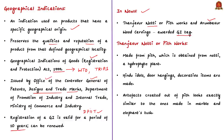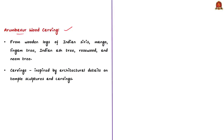As per the news article, Tanjavur Nethi or Pith works is made from pith obtained from Nethi, a hydrophyte plant. From this pith, artisans traditionally make Hindu idols, door hangings, and other decorative items. The specialty of these artifacts is that they look similar to items made in marble and elephant tusk but are brittle and break easily. Arumbavur wood carvings are done at Arumbavur town and nearby areas of Tamil Nadu, primarily made out of wooden blocks of Indian iris, mango, lingam tree, Indian ash tree, rosewood, neem tree, etc. The carvings are often inspired by architectural details on temple sculptures.